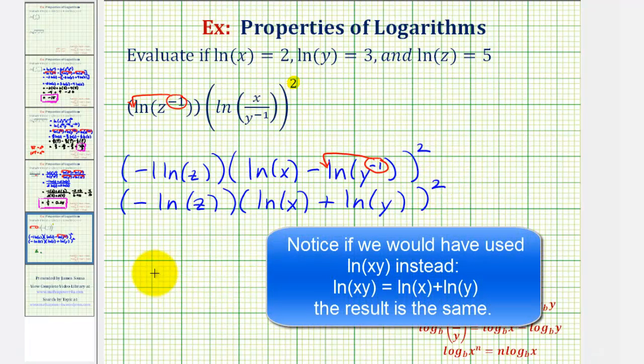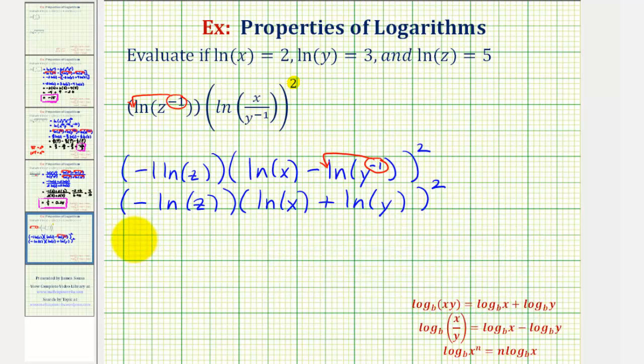And now in this form, we'll perform substitution for natural log x, natural log y, and natural log z. So we would have negative natural log z. Natural log z is five, this is negative five.